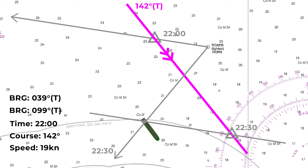Just set your parallel rules along that first line of position and transfer it down through your estimated position. As it's a transferred terrestrial line of position, we indicate that with two open arrows on the end. Now we've actually got two lines of position at 2230 — one shot there and then, and the other transferred from half an hour before. As we've got two lines of position crossing, we can actually plot a fix at 2230. This is the running fix.